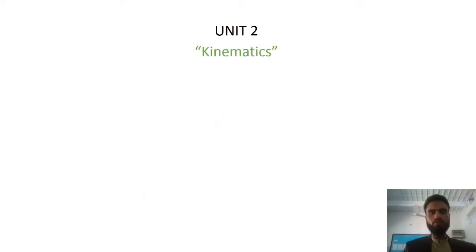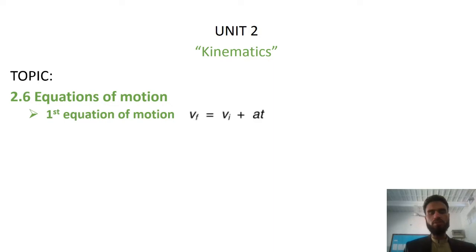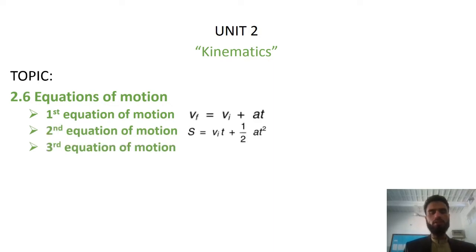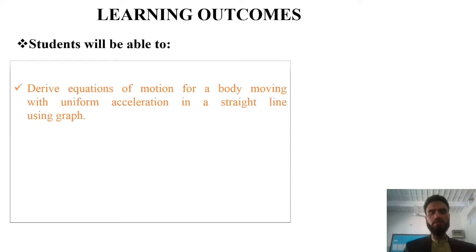We are in Unit 2, Kinematics, and we will discuss Equations of Motion which includes the 1st, 2nd, and 3rd Equation of Motion. At the end of this lecture, students are expected to derive the Equations of Motion for a body moving with uniform acceleration in a straight line using a graph. The motion will be uniformly accelerated and along a straight line — these are two basic assumptions considered while deriving the Equations of Motion.